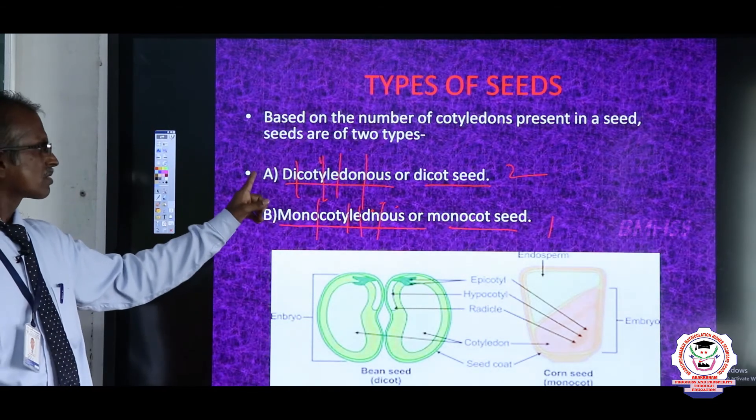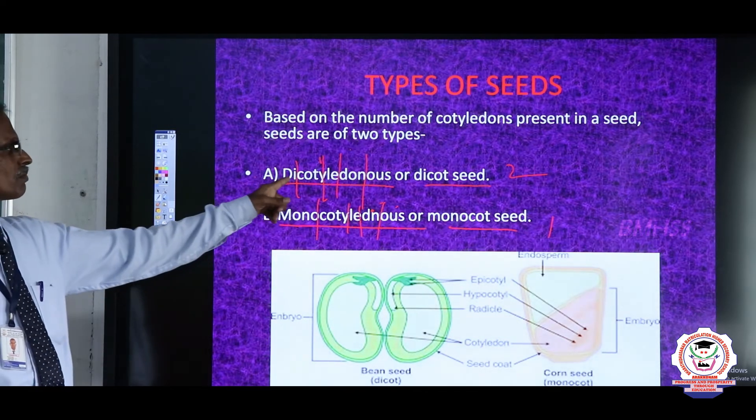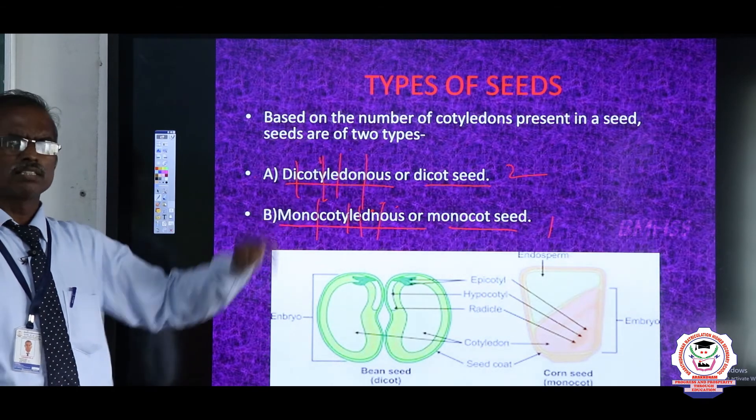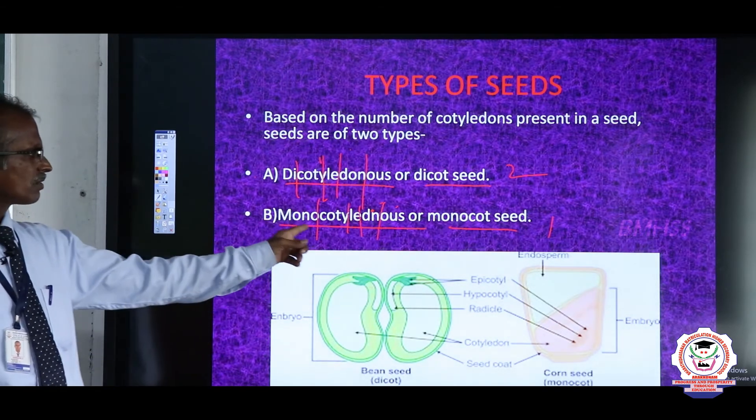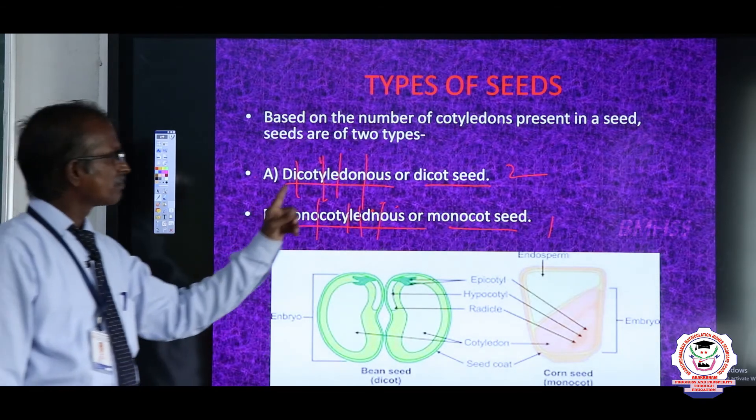Endosperm is absent in dicot. Endosperm is present in monocot. The food materials are stored in the cotyledon in dicot. The food is stored in endosperm in monocot.